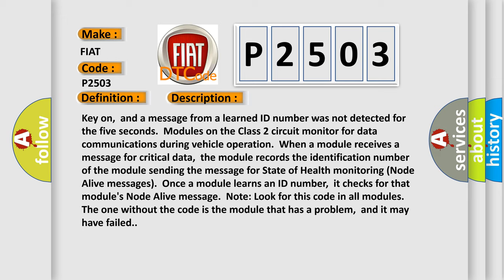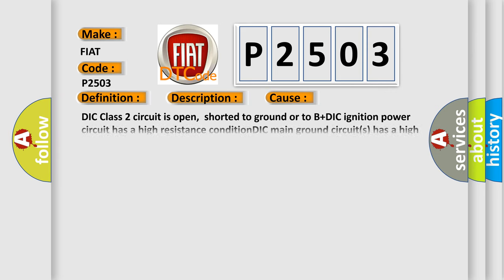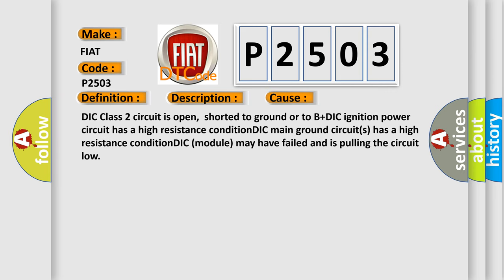This diagnostic error occurs most often in these cases: DIC Class 2 circuit is open, shorted to ground or to B+; DIC ignition power circuit has a high resistance condition; DIC main ground circuit has a high resistance condition; DIC module may have failed and is pulling the circuit low.